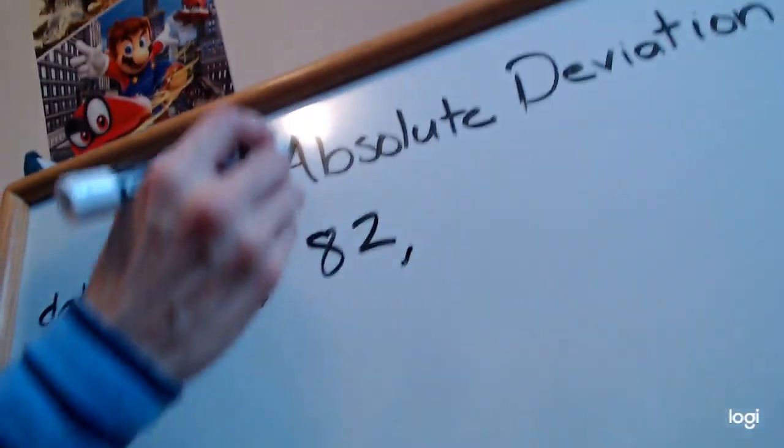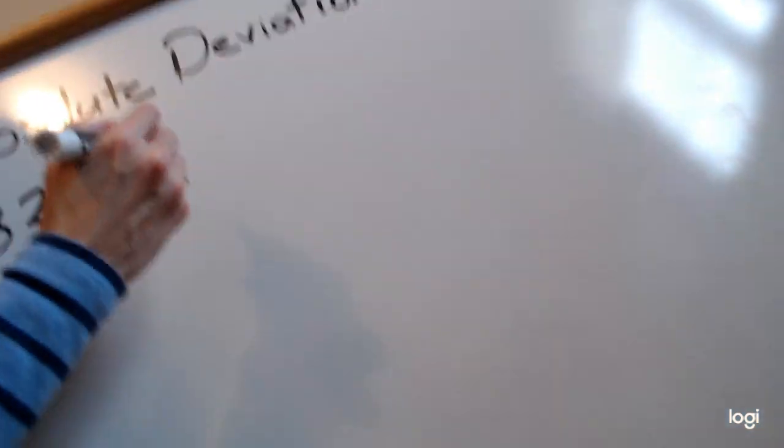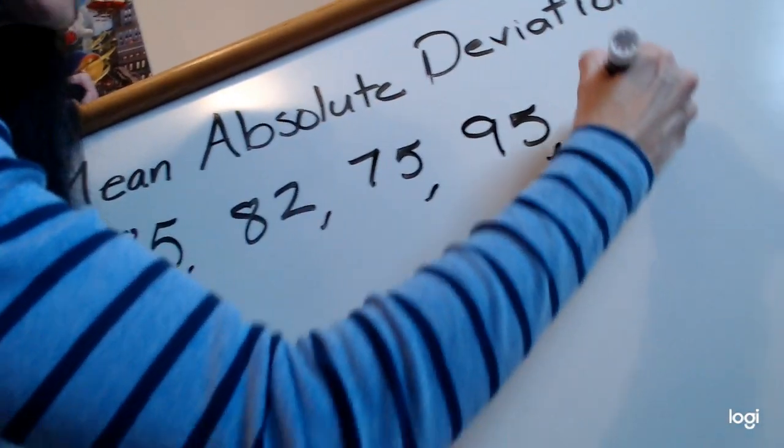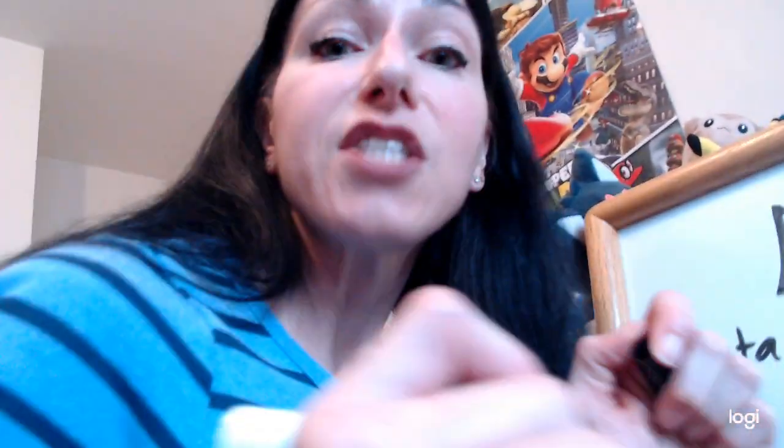Cyndaquil gets a 75. Pikachu gets a 95. Keldeo gets an 80. And Furret gets a 90. So there are three steps to this — just three. First, we find the mean of the data set, just like we did last week. Then we subtract. Then we find the mean of those answers. Mean, subtract, mean. Say it with me: mean, subtract, mean.